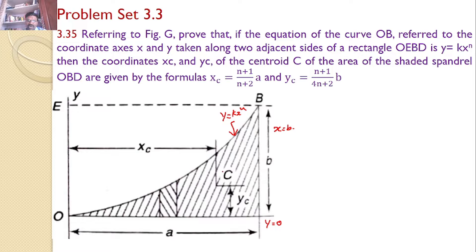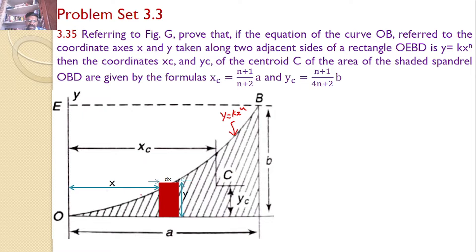Our interest is to find the centroid for this area bounded by all three lines. We consider a small rectangular strip at a distance X from the Y axis, with width DX and height Y. The height Y is not constant — it depends upon the value of X, so we use the relation Y = K·X^N. The centroid of this small strip has coordinates XG and YG.